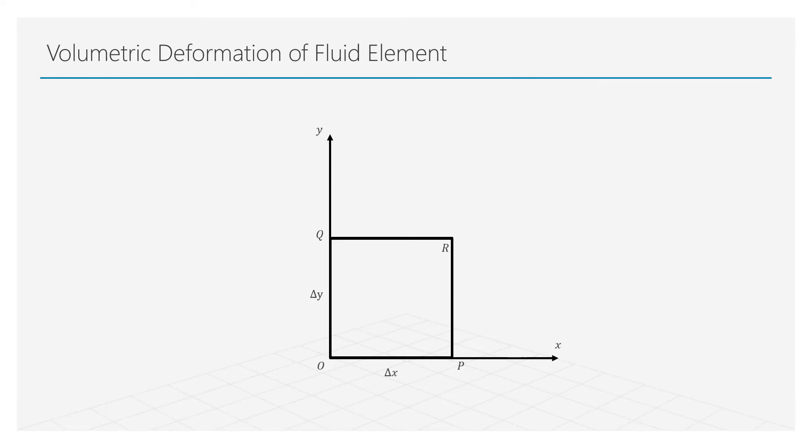The last and final type of fluid motion commonly found in fluid elements is volumetric deformation. The shape of a fluid element is defined by the angle between its line segments. During volumetric deformation, this angle remains constant. This retains the original shape of the element. However, the length of the element in x and y directions change.